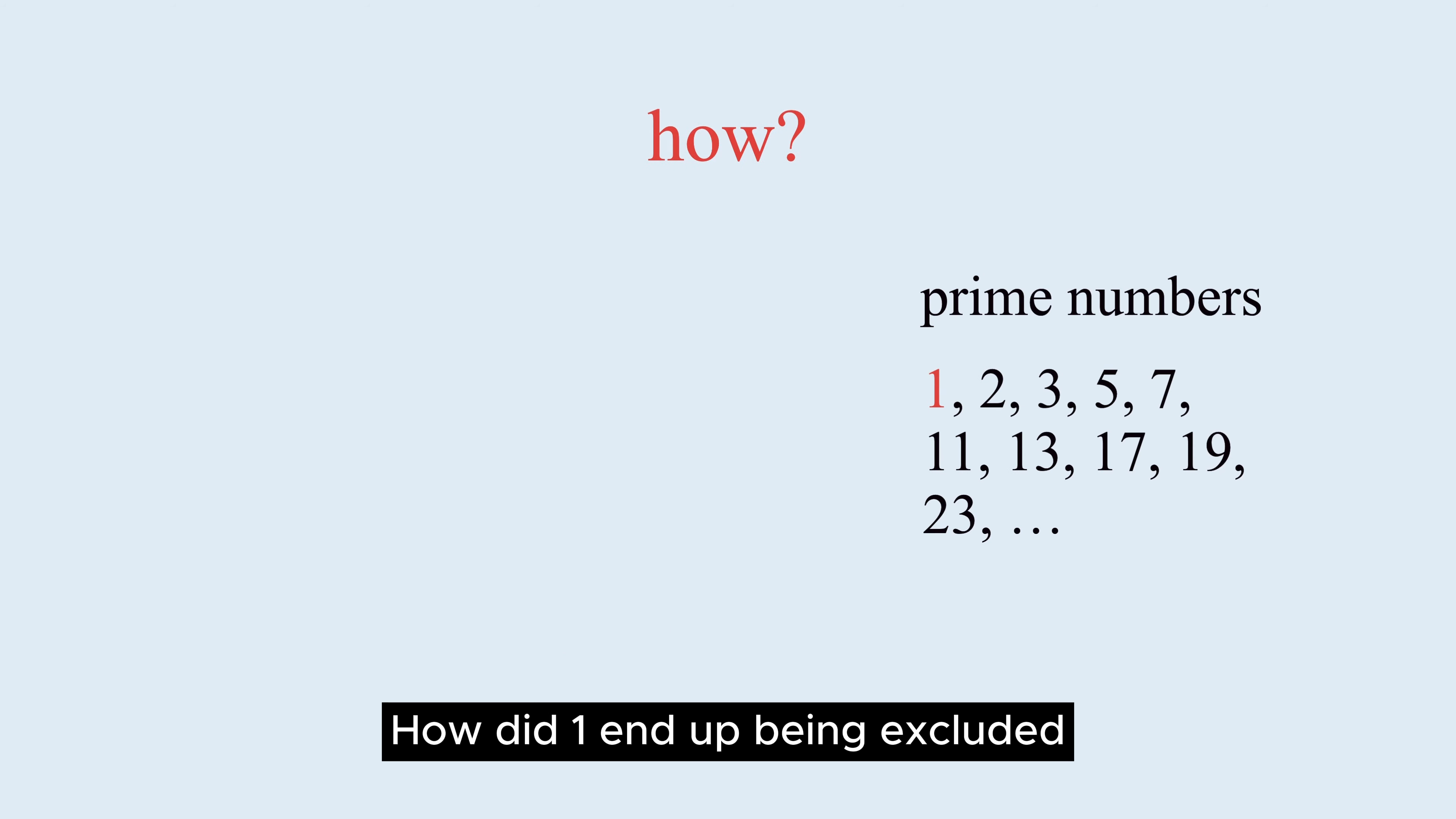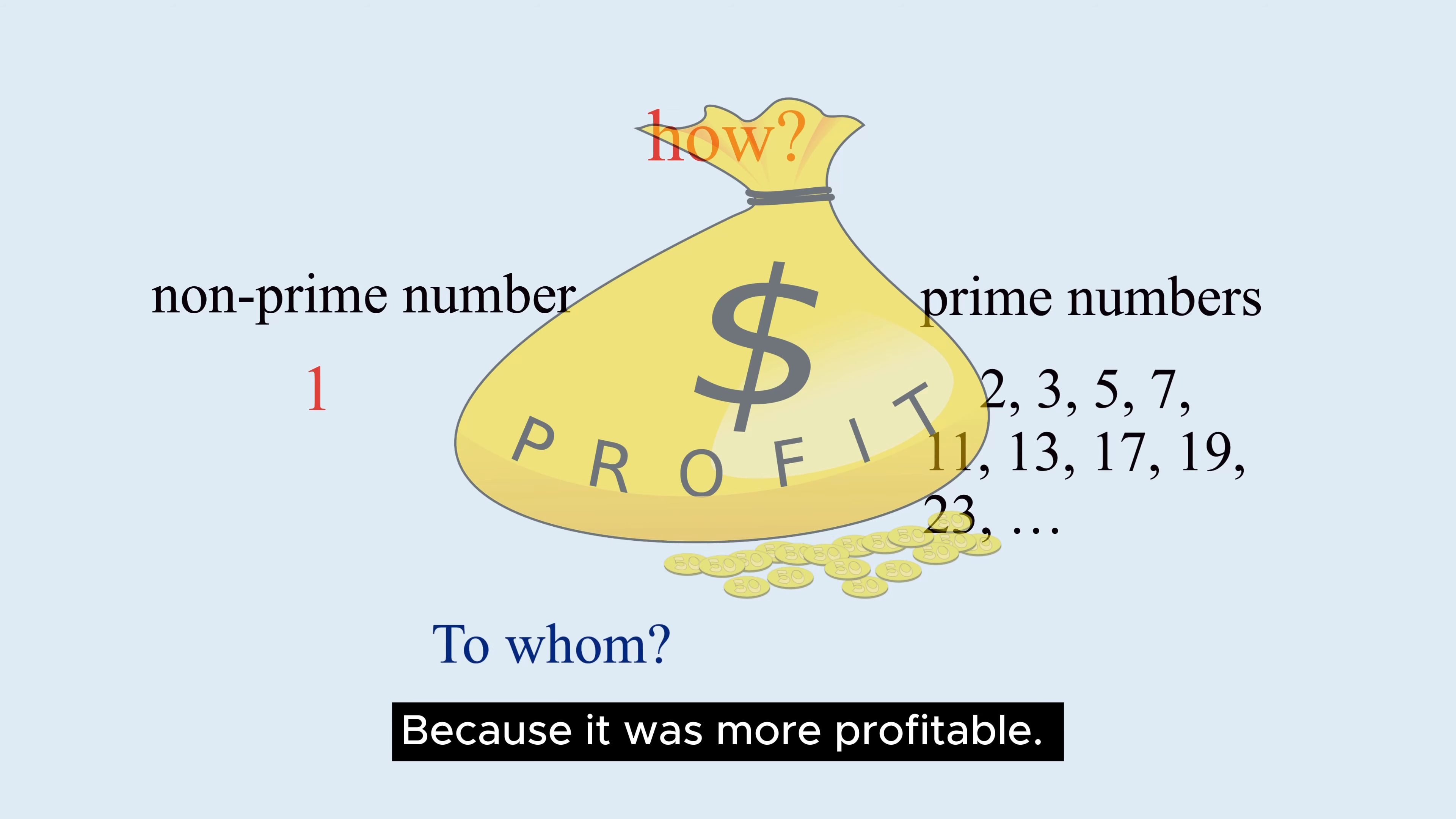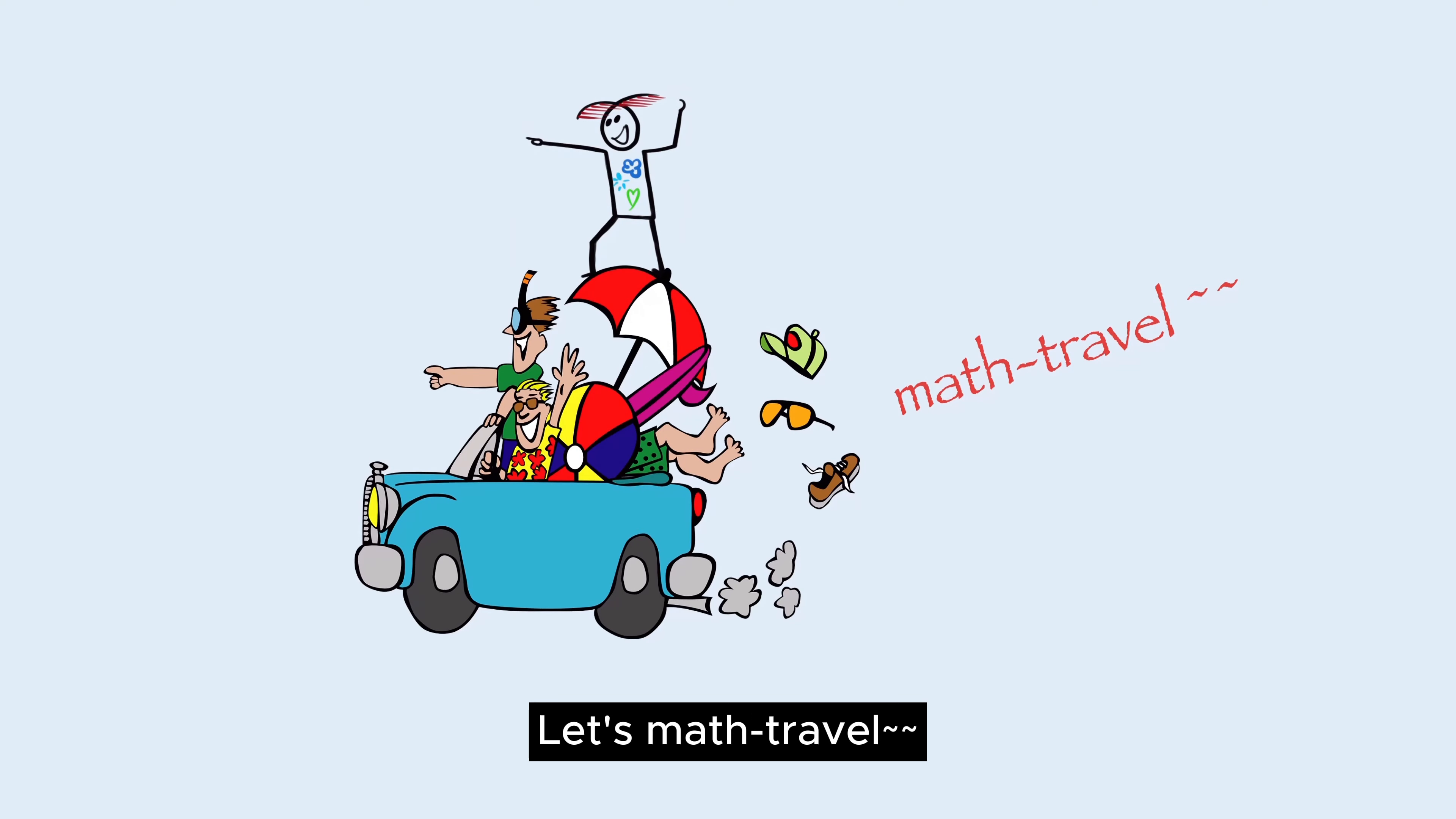How did 1 end up being excluded from prime numbers like it is now? Because it was more profitable. To whom? To math. Let's math travel!